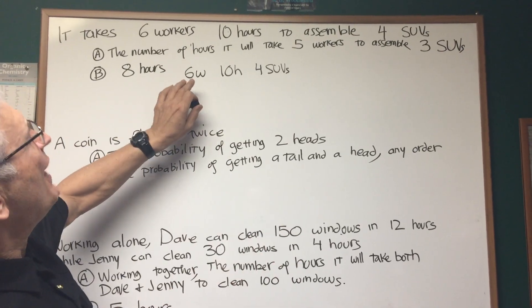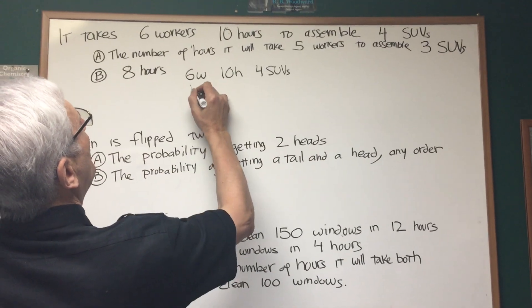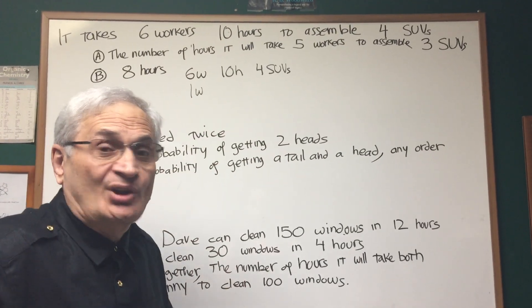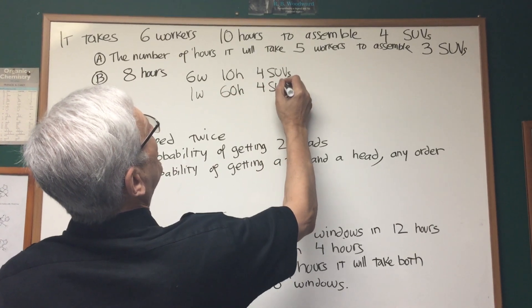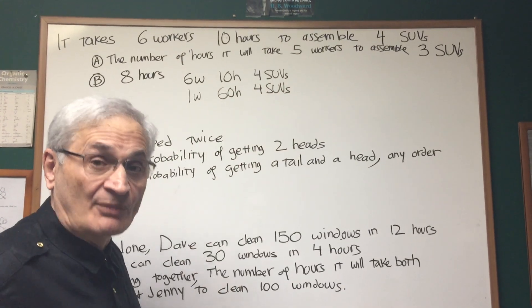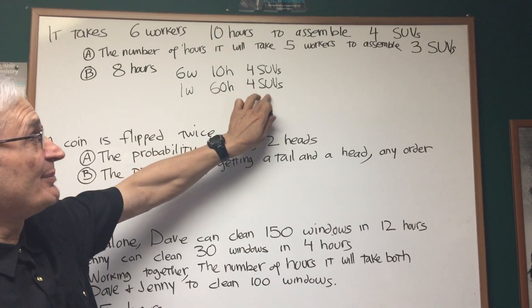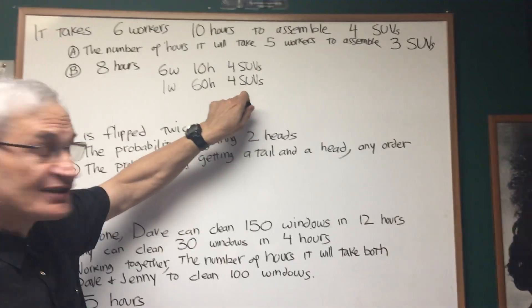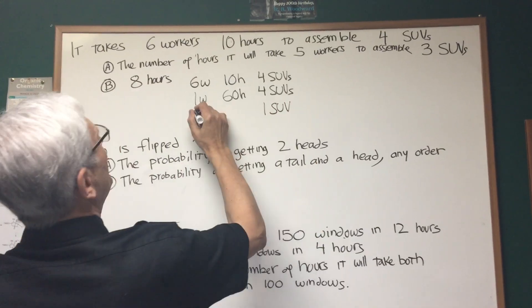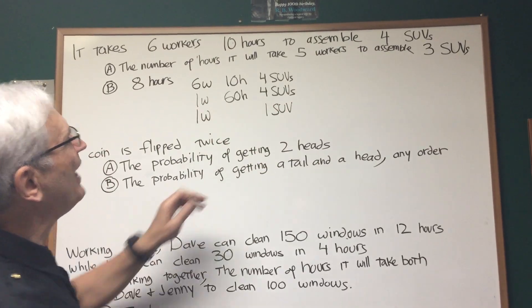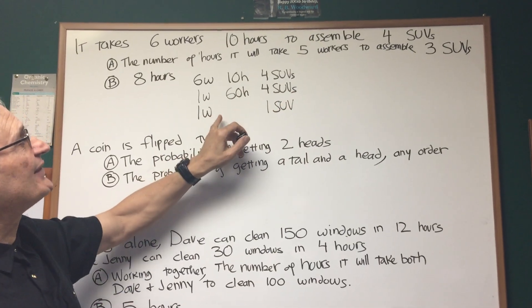Okay, so one worker, sixty hours to make four SUVs. Now, remember, we want to one-ify that last expression also. So, we want to make this one SUV, okay? So, we have one worker and one SUV. If it takes one worker sixty hours to make four SUVs, well, how many hours would it take that one worker to make one SUV? Well, just divide by four. Sixty divided by four is fifteen hours. Not bad, right?